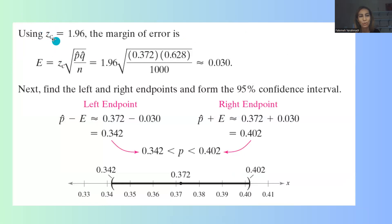Since z sub c, or critical value, is 1.96, the margin of error is z sub c times the square root of p-hat q-hat divided by n, which is 1.96 times the square root of 0.372 times 1 minus 0.372, which is 0.628, and you're going to divide that by n. N is the sample size. Remember we had a thousand US teens. So the distance or the margin of error is about 3%, 0.03 is 3%.